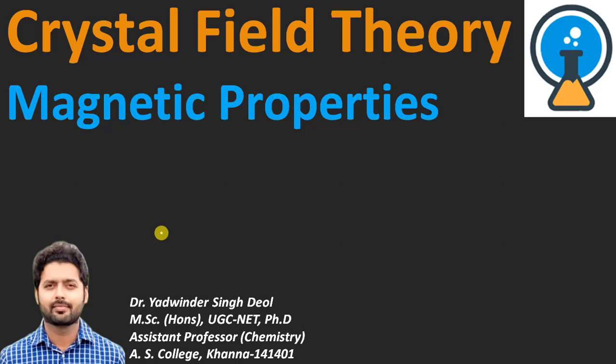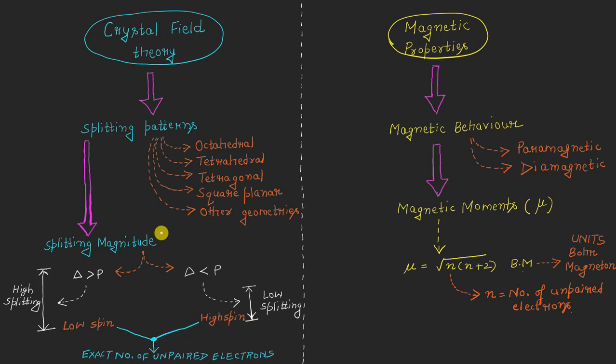Let's talk about the magnetic properties of the transition metal complexes and see how the crystal field theory helps in the prediction of all these properties. The crystal field theory tells us about the different splitting patterns in case of the transition metal complexes. The splitting patterns are different for octahedral, tetrahedral, tetragonal, as well as the square planar type of geometries.